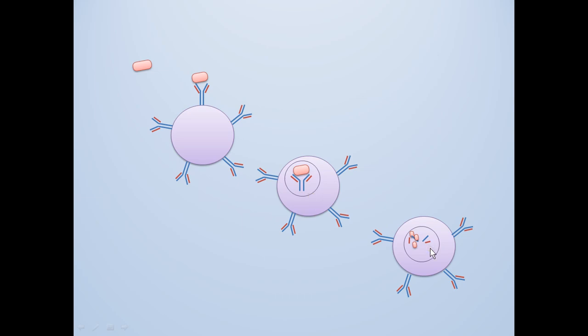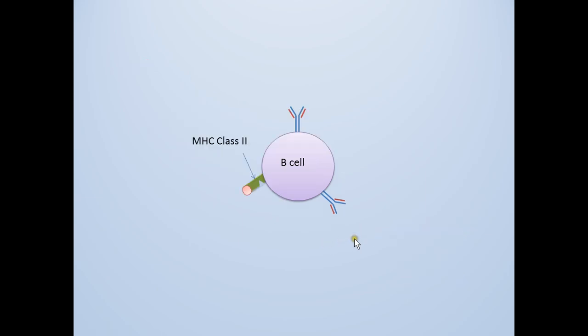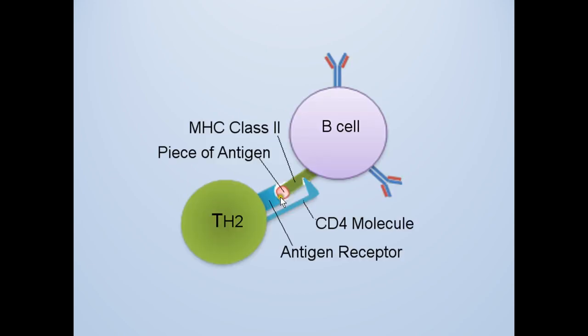The B-cell then loads the piece of antigen onto an MHC class II molecule for presentation. Now the B-cell is ready for full activation. This requires the help of a helper T-cell.